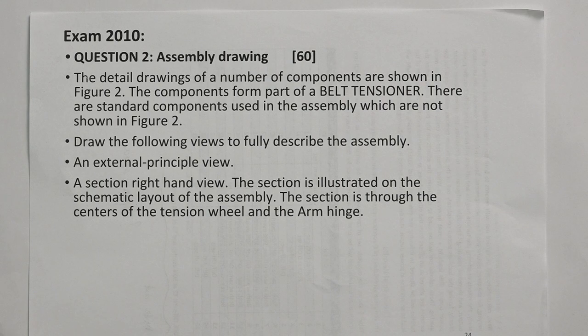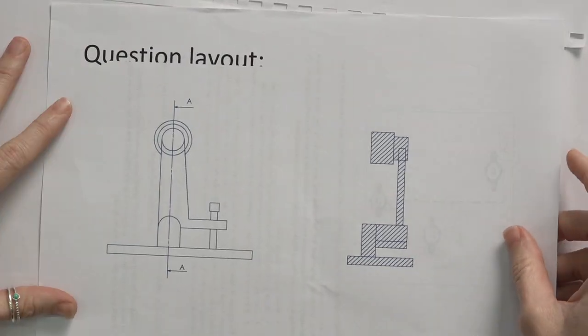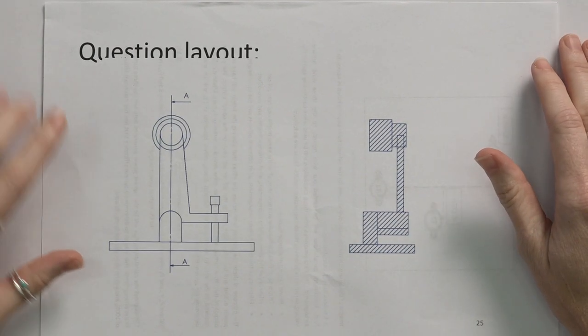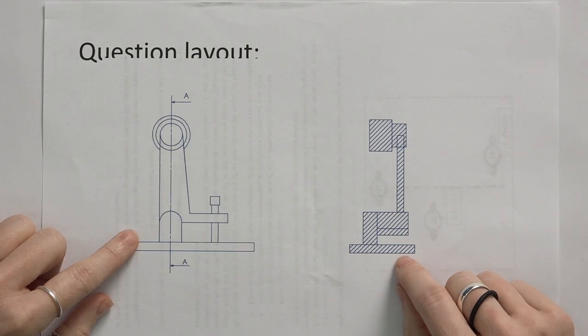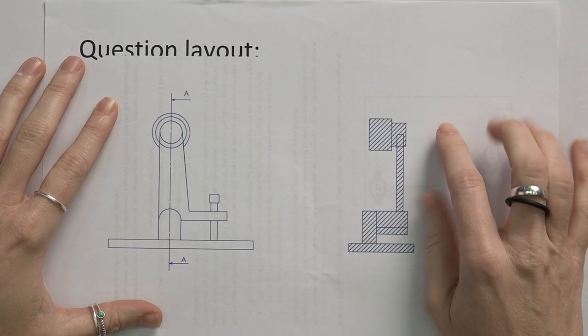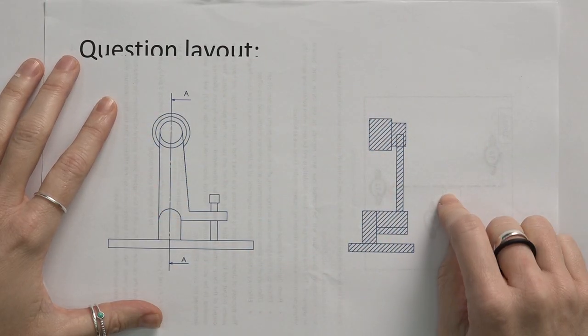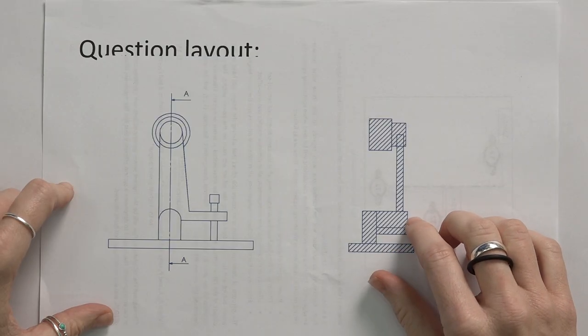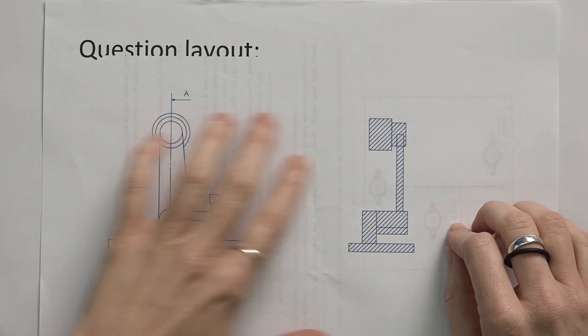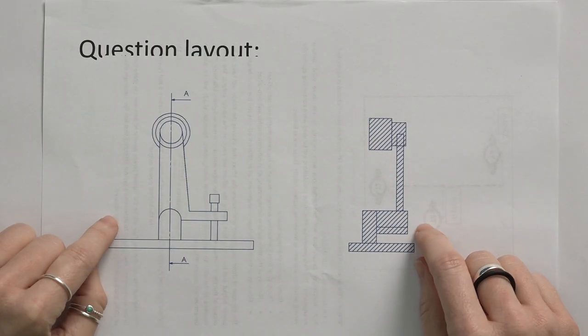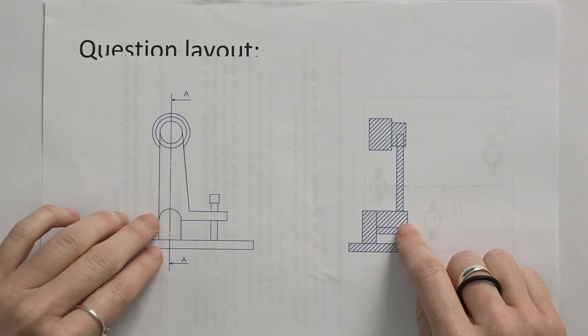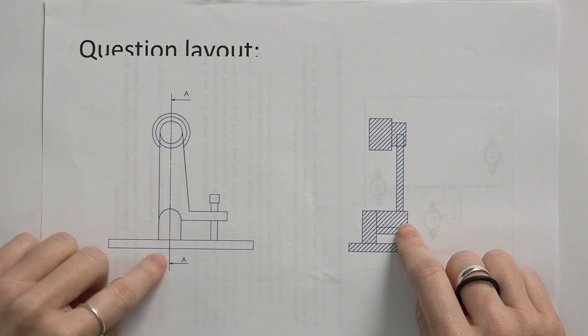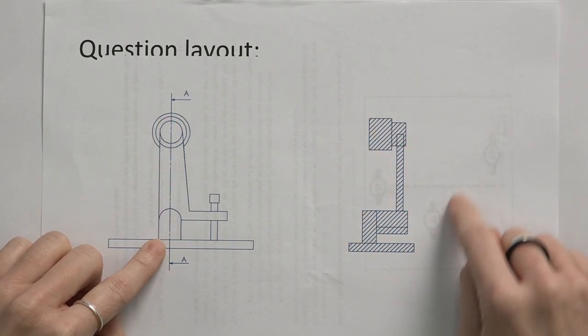So the schematic will be given to you in the exam with these questions. We have these two views: an external principle view and a section right hand view. When you use this layout, it helps you when starting to assemble the different parts so you can have an idea of how this final component needs to look. This line with the AA is an indication of where we are making this section.